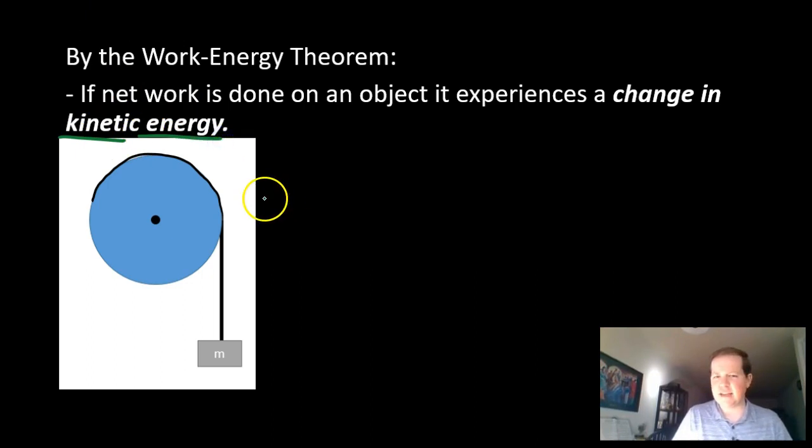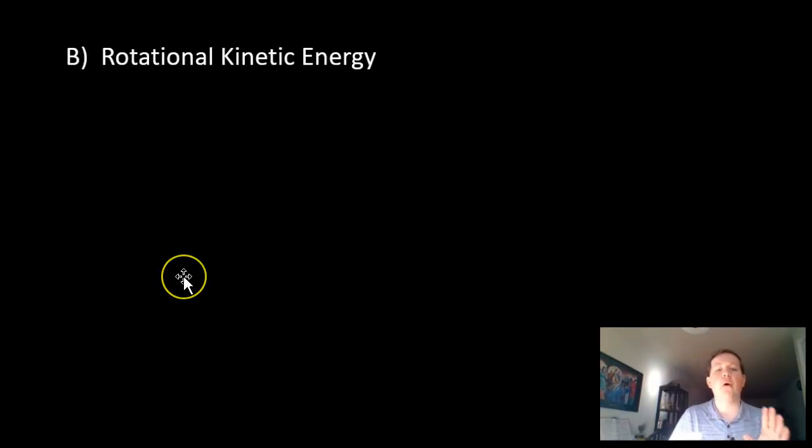But wait just a second. Is this pulley ever translating? Is it ever moving from one side to another? No. So it's not a kinetic energy in our old sense because our old version of kinetic energy is when something is moving, going from one position to another, translating. There must be another type of kinetic energy. And that's what we're looking at right here. Part B, rotational kinetic energy.